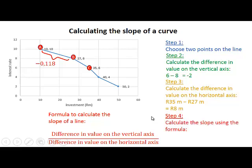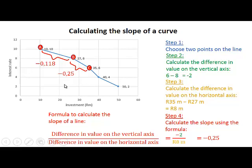Step 4: to calculate the slope, it is minus 2 — the difference in value on the vertical axis — divided by the difference in value on the horizontal axis, which is 8 million. So minus 2 divided by 8 gives us minus 0.25. Between points B and C, the slope of the line is minus 0.25.